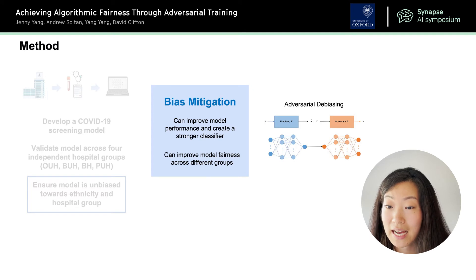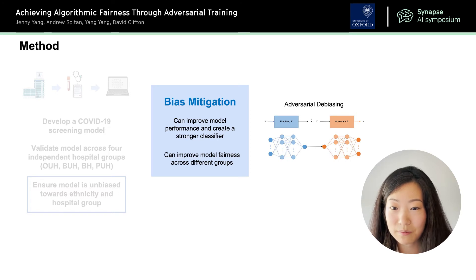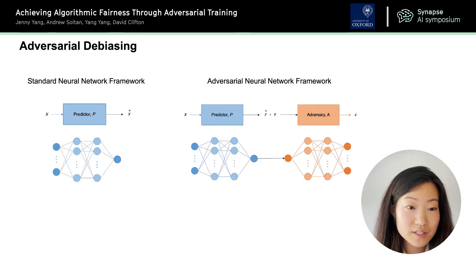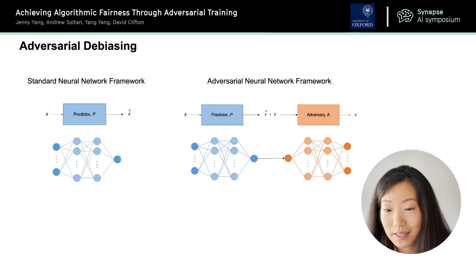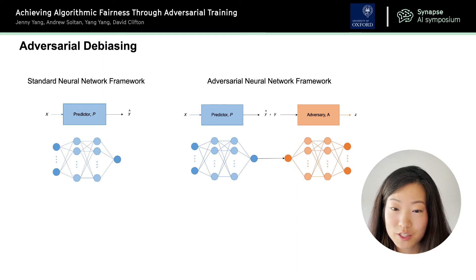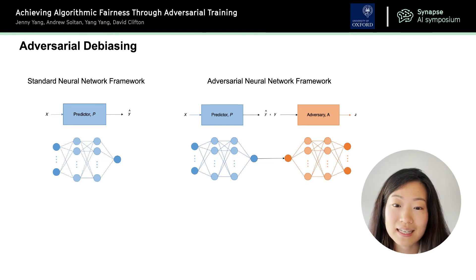To do this, we use something called adversarial debiasing, which is a debiasing technique that works on an algorithmic level. On the left you see a standard neural network framework, and on the right you see an adversarial neural network framework, which instead of having just one predictor network for the main task, also has an adversary network that is trained in parallel and against the predictor network.